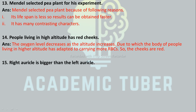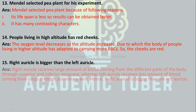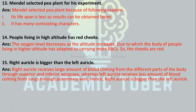The right auricle is bigger than the left auricle. Why? The right auricle receives a large amount of blood coming from different parts of the body through the superior and inferior vena cava, whereas the left auricle receives less blood coming from the lungs through the pulmonary veins. Hence the right auricle is bigger than the left auricle.